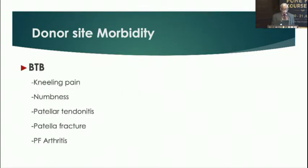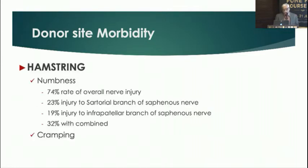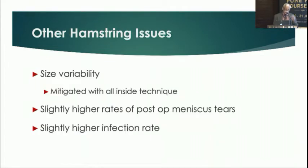Bone patellar tendon is associated with significant donor-side morbidity: pain while kneeling, numbness, patellar tendonitis, patellar fracture, and patellofemoral arthritis. Hamstrings have less donor-side morbidity — there is some neural involvement from the sartorial branch of the saphenous nerve and the infrapatellar branch, but these are usually transient. Cramping at the back of the thigh is also not permanent. Graft diameter can vary from six to nine millimetres, but this has been mitigated with all-inside techniques.